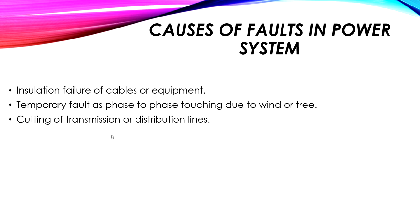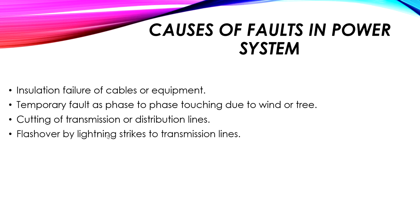Another cause is the cutting of transmission or distribution lines — when cut, they connect with the ground, causing faults. Another cause is flashover on transmission lines due to lightning strikes, which can cause a phase to connect with the ground, or even cause line-to-line or line-to-line-to-ground faults. Now let's go to the ETA program to perform the short circuit analysis.